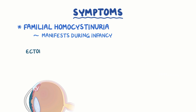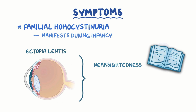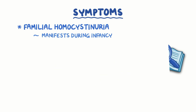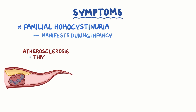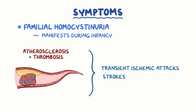Ectopia lentis can cause nearsightedness and blurred vision, and neurological problems like intellectual disabilities and seizures can also occur. Finally, the combination of atherosclerosis and thrombosis can cause transient ischemic attacks, or strokes, even in childhood.